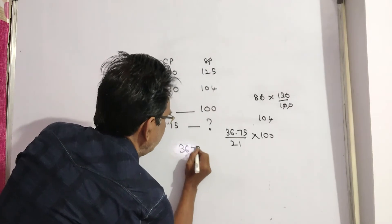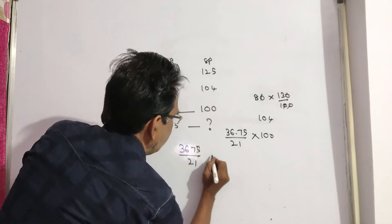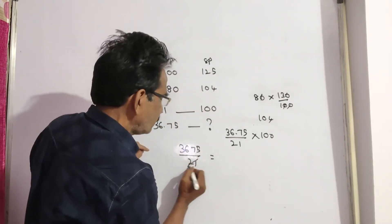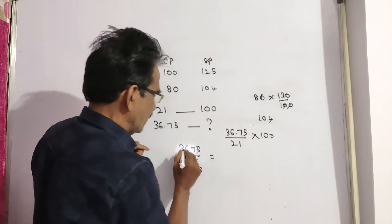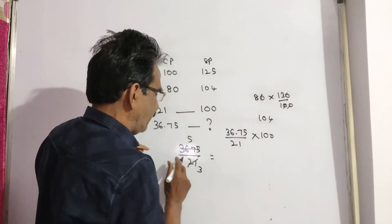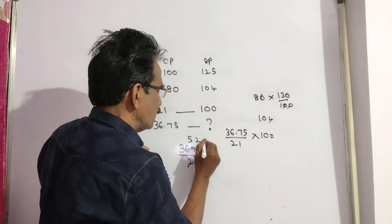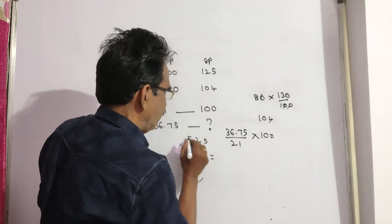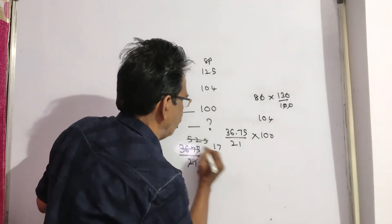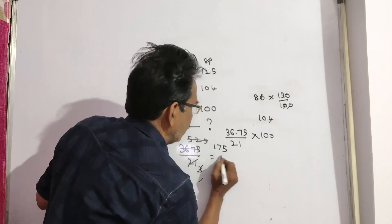that is 36.75 by 21. 7 threes, 7 fives 35, 7 twos, 7 fives, 3 ones, 3 seventeens 51, 3 fives 15, 175.